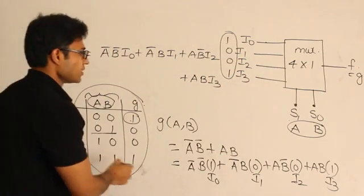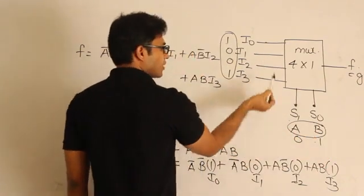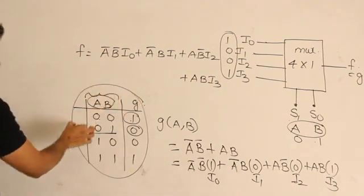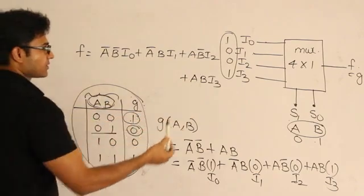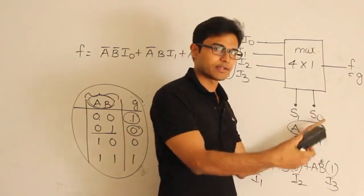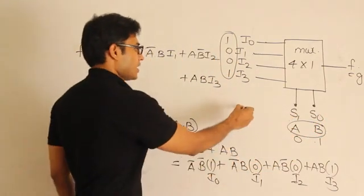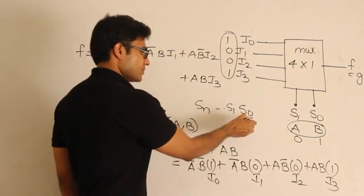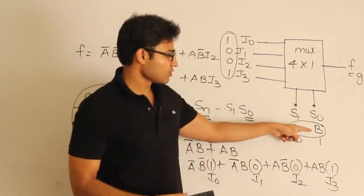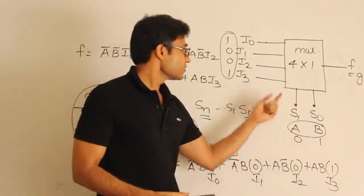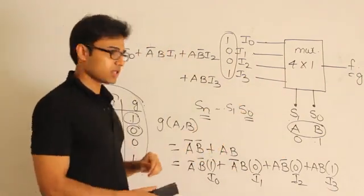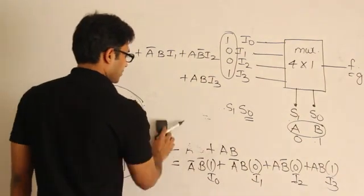If a,b = 0,1, the selected input is i1 = 0, so output is 0 — which matches XOR. Therefore the multiplexer implements function g exactly, provided a and b are given to the select lines. One important point: s0 is the least significant bit and s1 is the most significant bit of the select line, and the assignment matters.